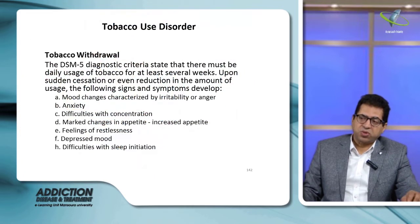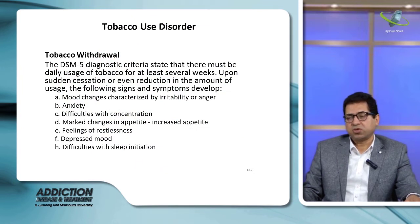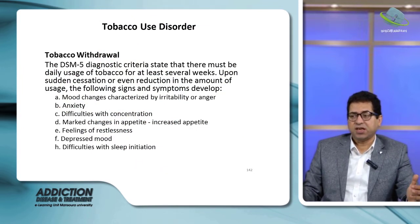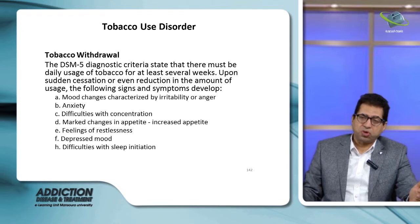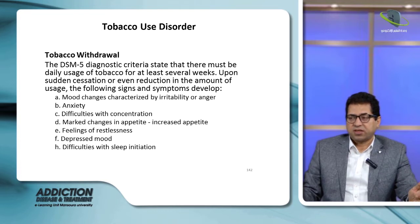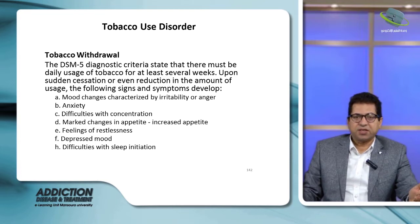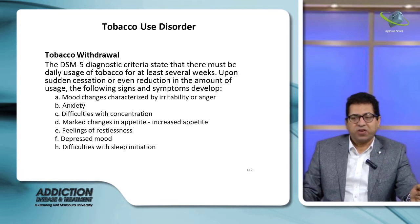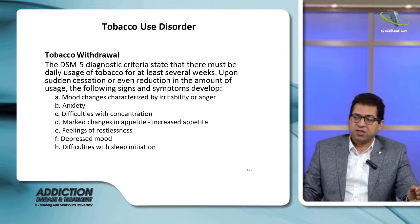Tobacco withdrawal symptoms according to DSM-5 criteria develop once a person stops the drug. These include mood changes such as irritability, anger, and anxiety; difficulty with concentration; marked change in appetite; restlessness; depressed mood; and difficulty with sleep initiation.